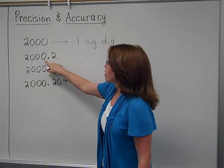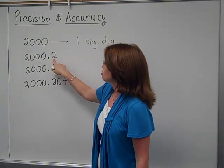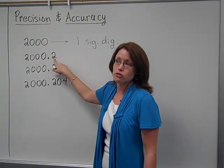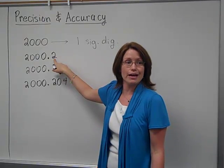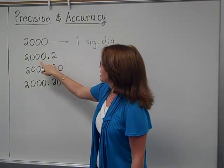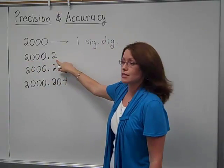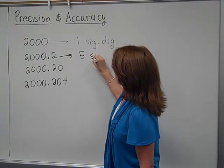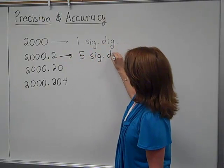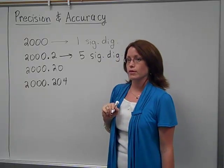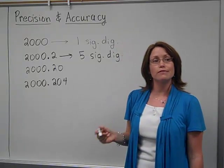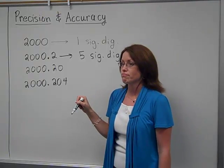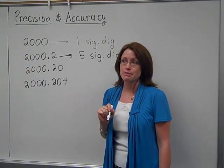These zeros however, in 2000.2, are in between two non-zero numbers. They're in between two numbers that are automatically counted as significant. So in this case everything listed here is going to be significant and you have five significant digits. So an exception to the rule is if you put zero in between anything that's one through nine, they'll automatically be significant.